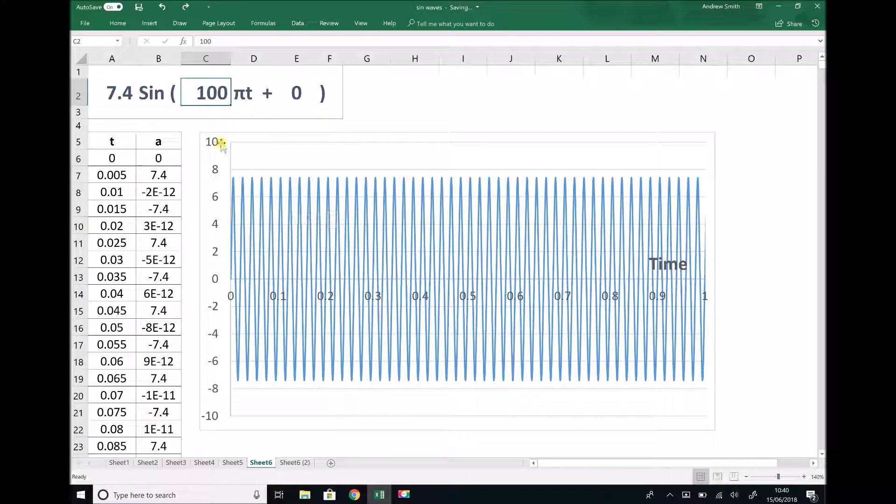So now that we've introduced this concept of how periodic functions are affected by this number here, we can begin to relate that to some new parameters. And the parameters that we're going to be looking at are frequency, which is the number of cycles per second, periodic time, which is the time for one complete cycle, and angular frequency, which is the number of radians per second, but we can use that to calculate some of these other parameters.